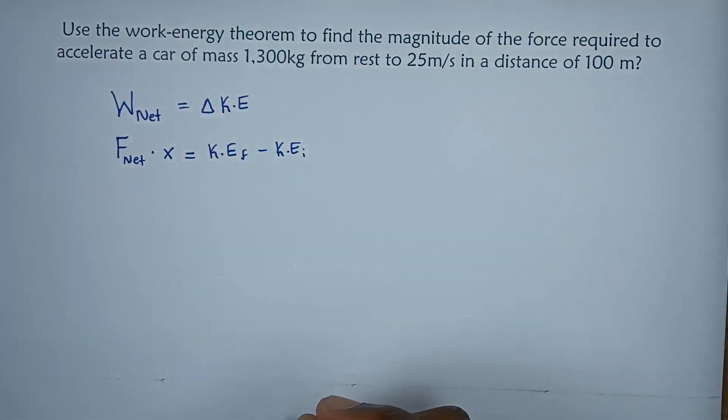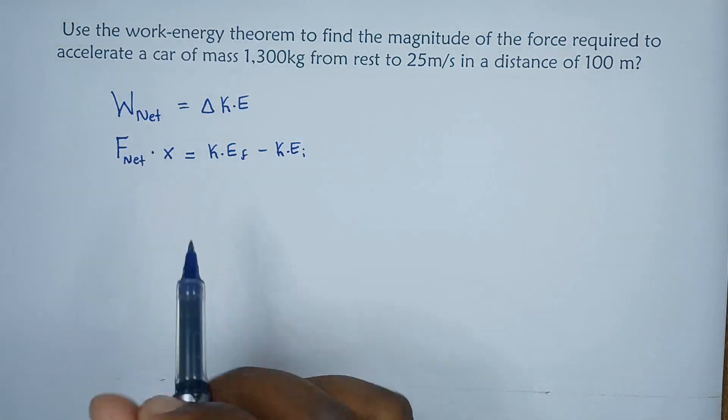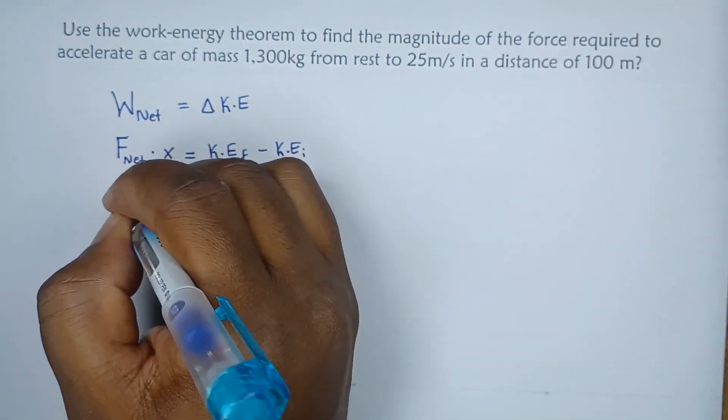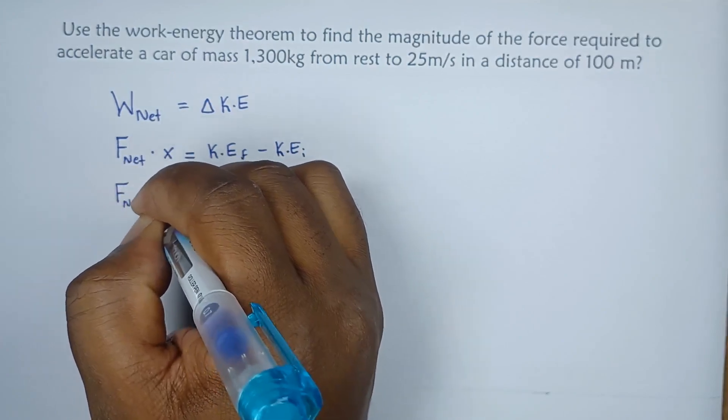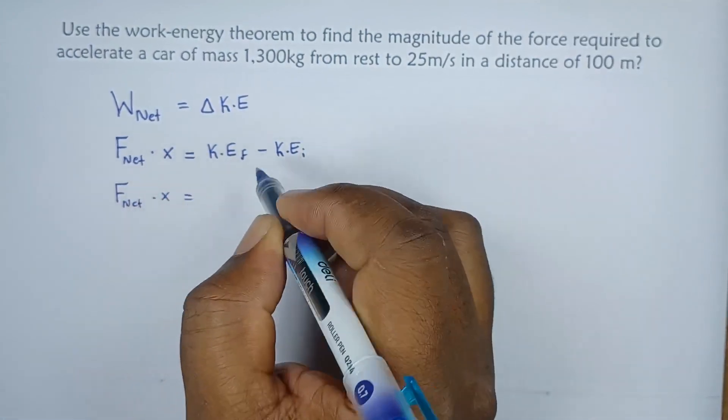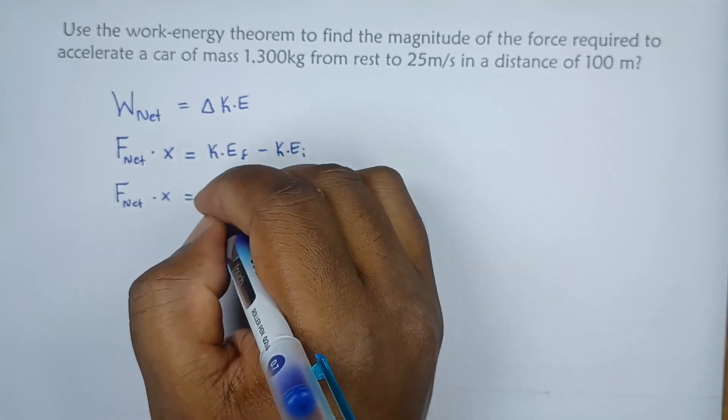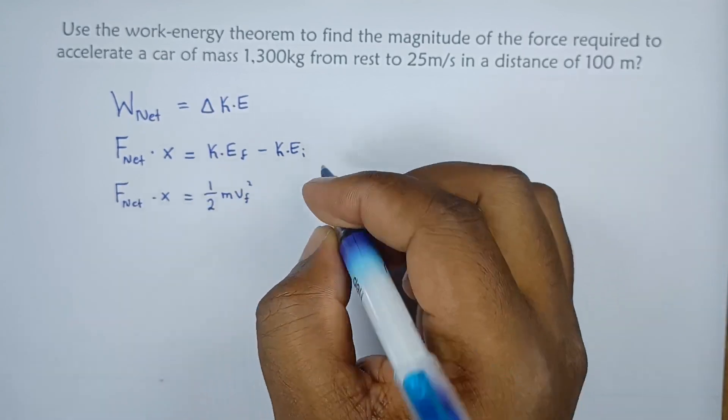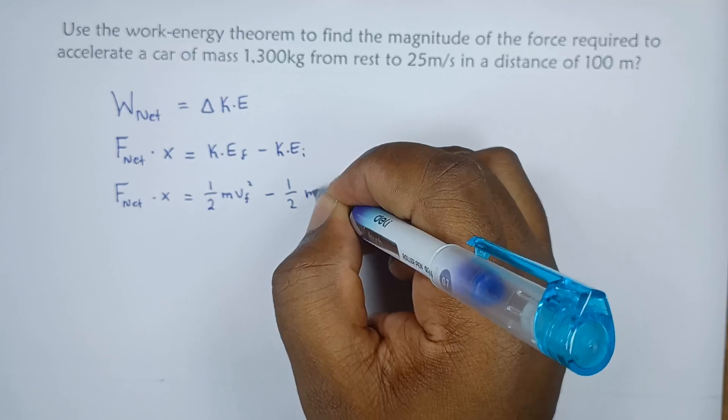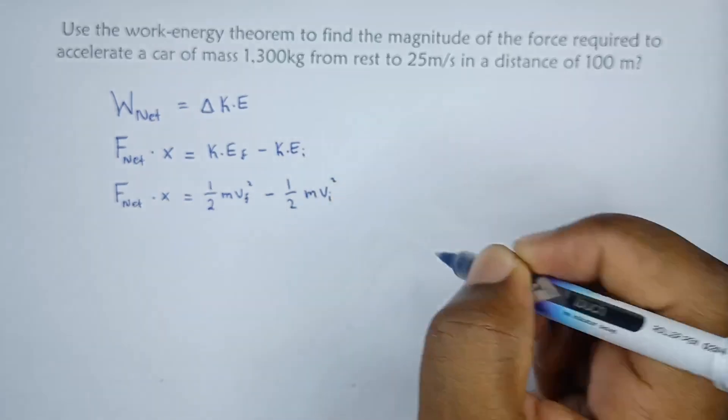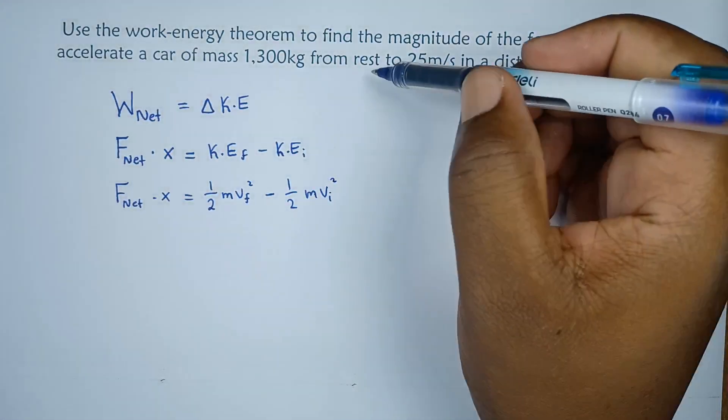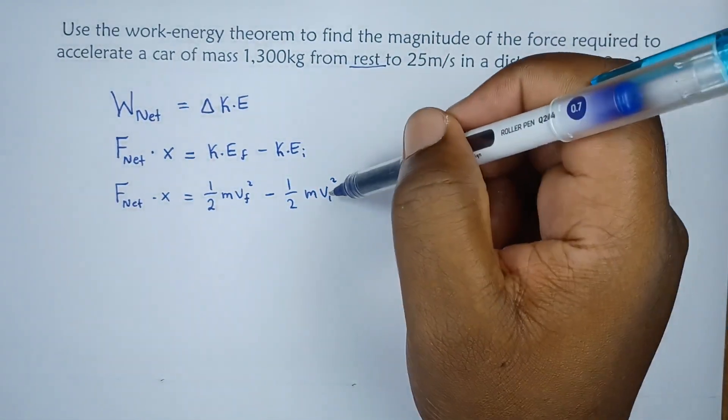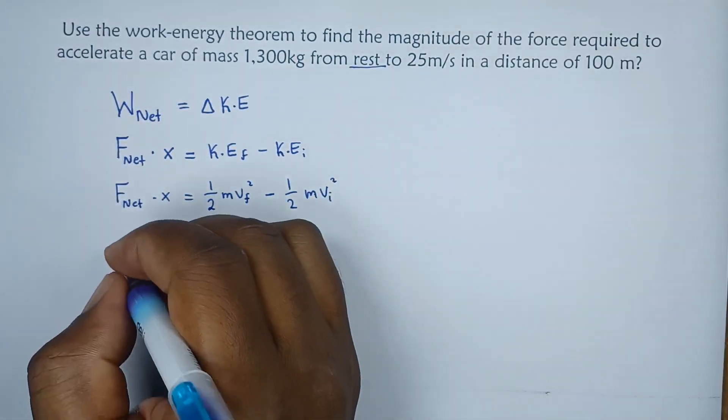So if that's the case, let's see how we can do some replacements. We can say the net force multiplied by x, the displacement, equals the final kinetic energy half mv squared, minus half mv initial squared. Now remember, the initial velocity is zero.